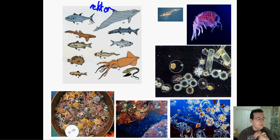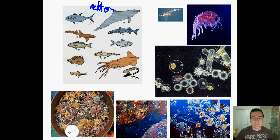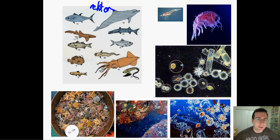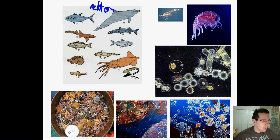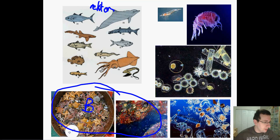Then there are the bottom dwellers — animals that live deep within the water and at the bottom of the ocean. They're mostly decomposers or detritivores; they eat dead materials off the bottom or feed on bacteria that do that. Examples include sea stars, sand dollars, lobsters, and sea urchins. You can see them here on the bottom, buckets full of them.